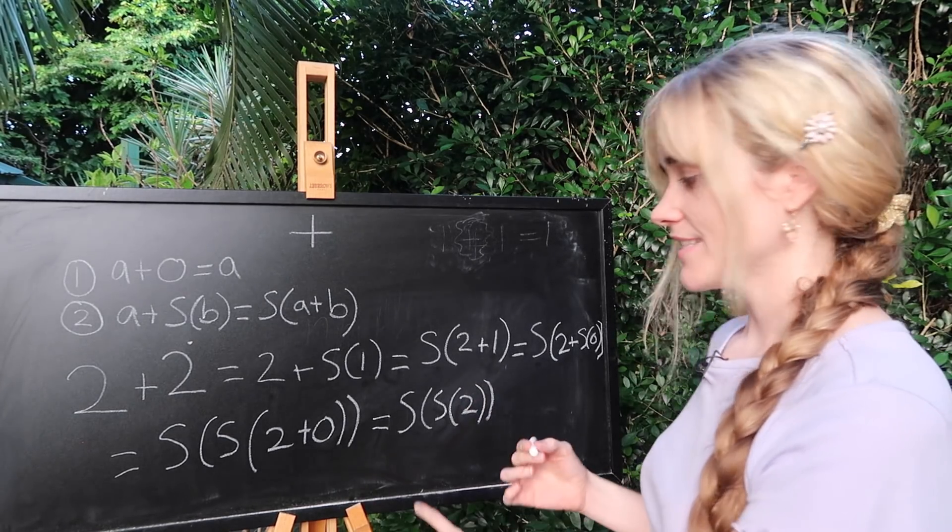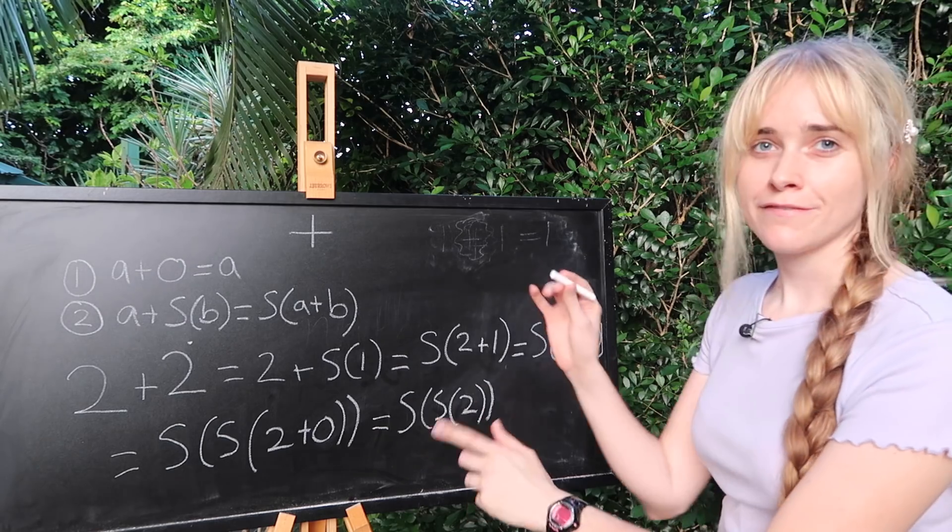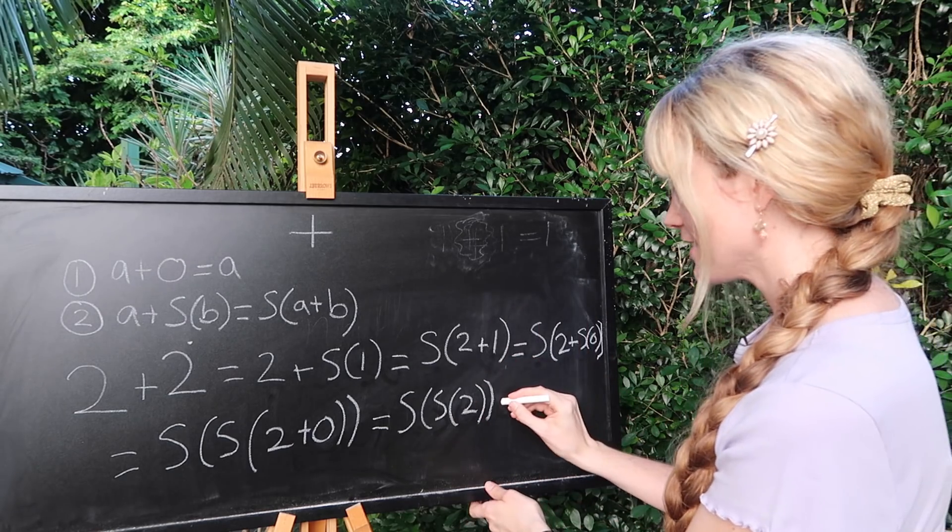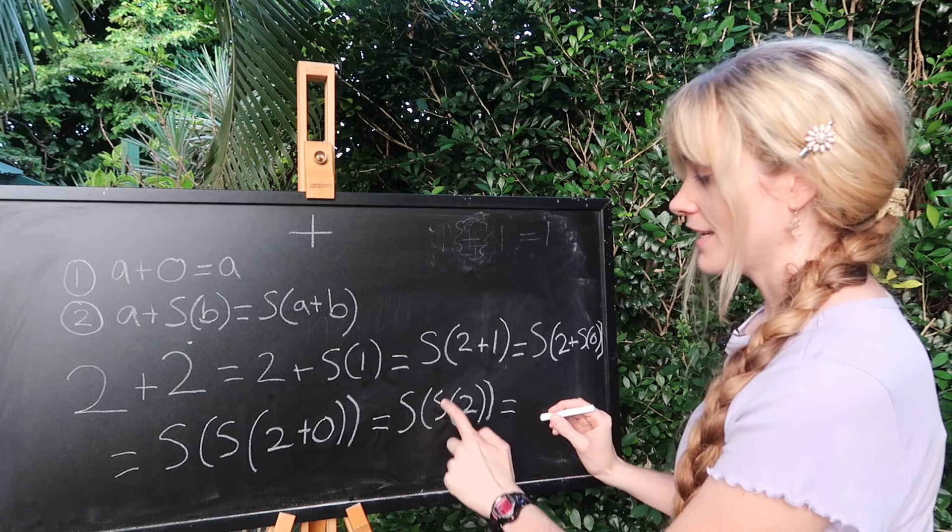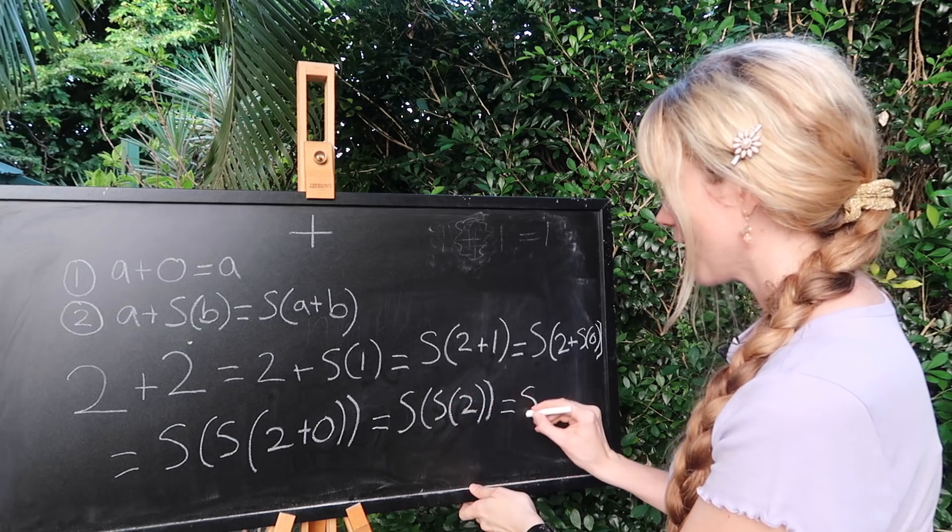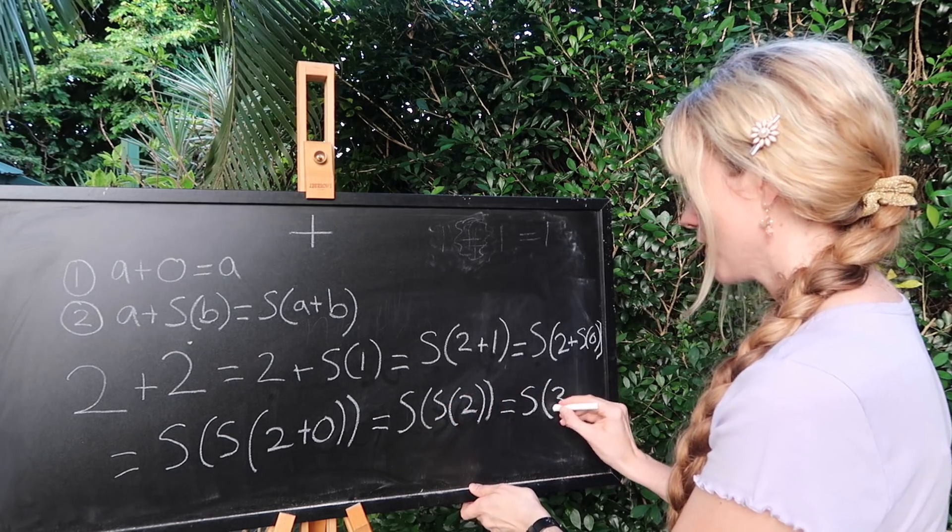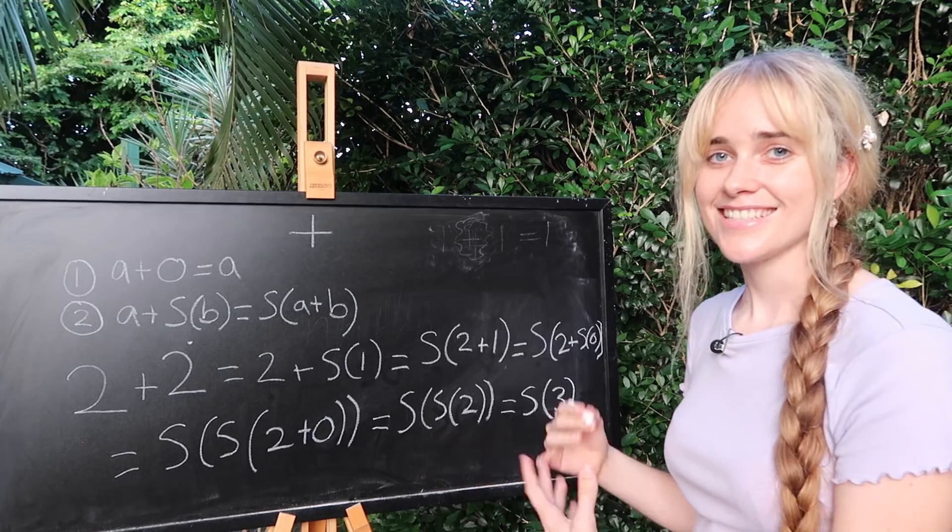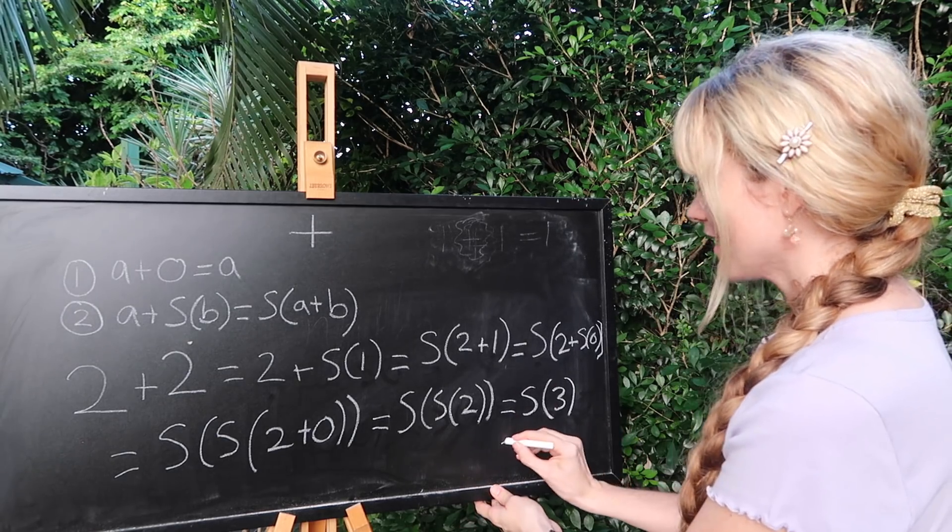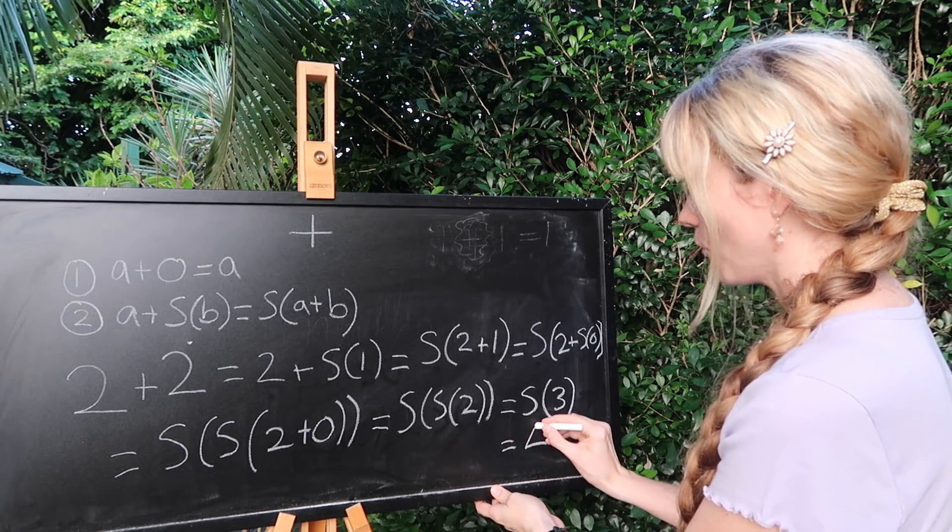Getting very close now. The successor of two we defined before when we were doing our axioms as being the label three. So now we have the successor of three. And the successor of three is nothing but four itself.